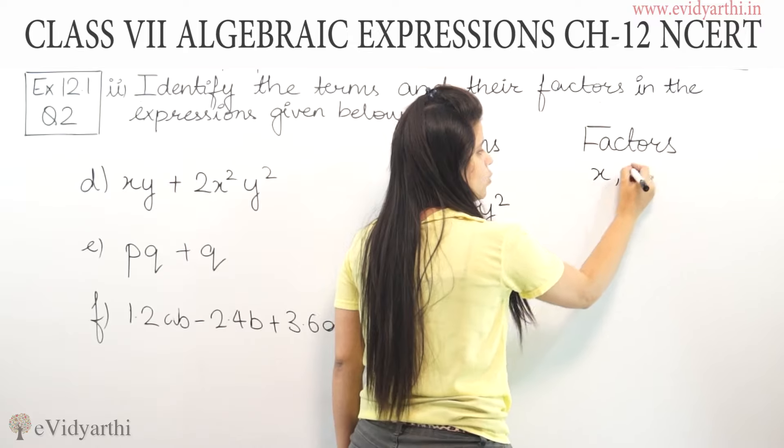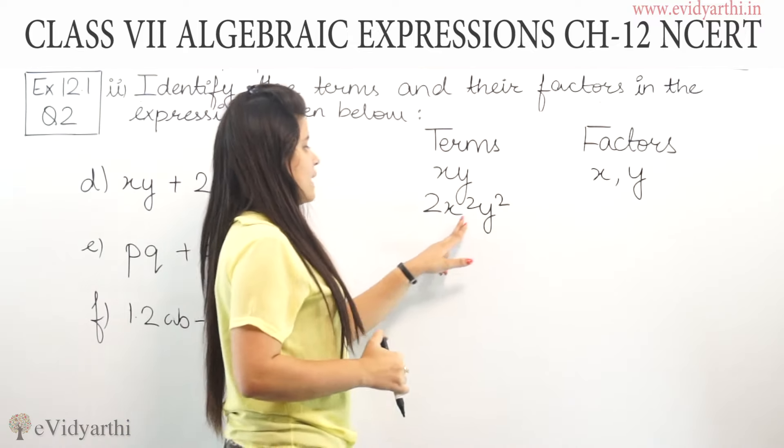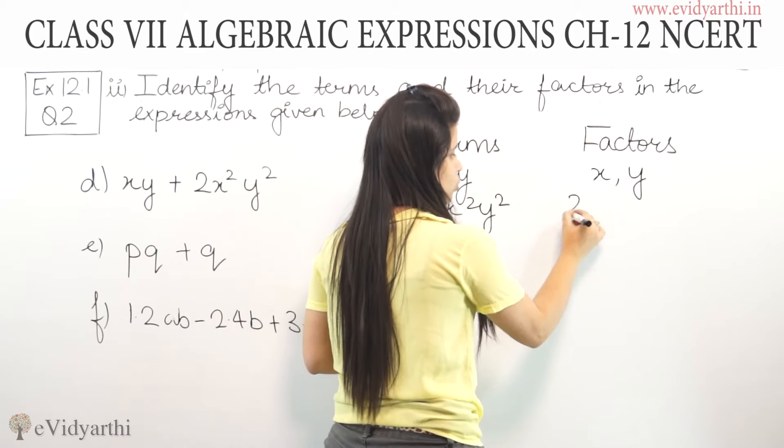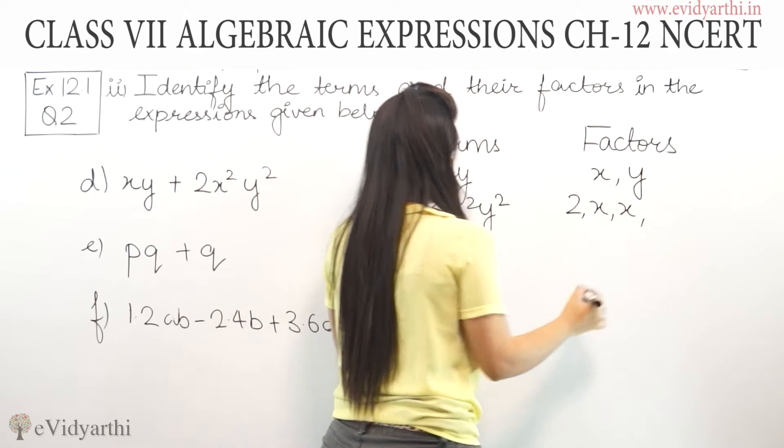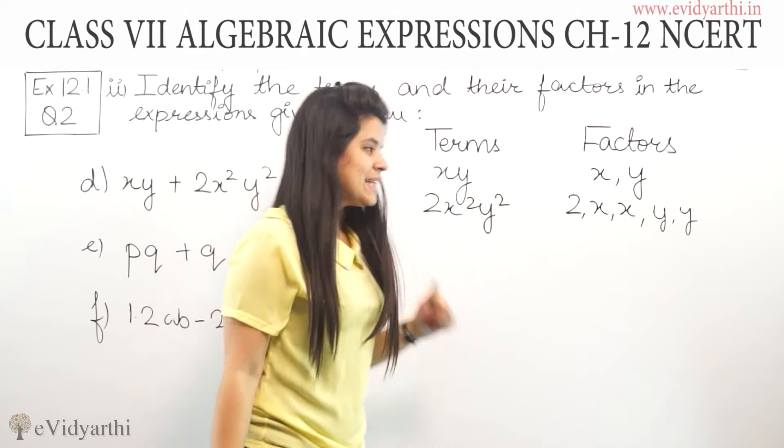Now, let's write the factors. For xy, one factor is x and another is y. Similarly, for 2x²y², we have 2, then x² means x appears twice (x, x), and y² means y appears twice (y, y).